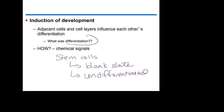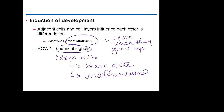Differentiation means that we're going to look at what cells will be when they grow up. The chemical signals that we're going to look at actually impact stem cells and help them to go through this differentiation process.